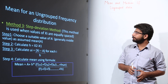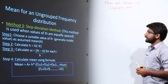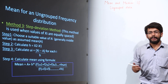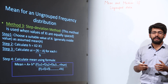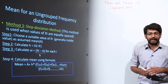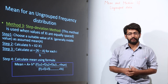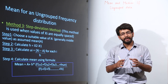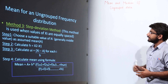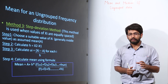Now let's move to step method number 3, which is the Step Deviation Method. Suppose the values of FIs and DIs are also very large — that means method 2 will become slightly difficult. So to make that method easier, we have method 3, which is the Step Deviation Method.